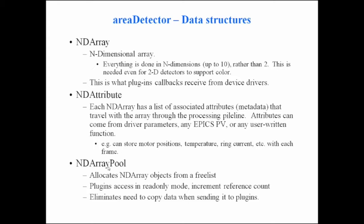An NDArray has attached to it a linked list of attributes — NDAttributes — which are metadata that help describe the array. As the array goes through the processing pipeline from the driver to plugin one, to plugin two, to plugin three, these attributes travel with it. Each plugin can add additional attributes, like a processing plugin might add an attribute describing what it did to the data.